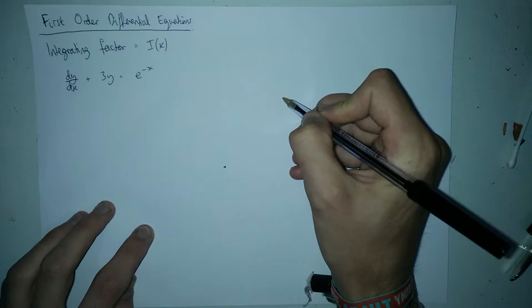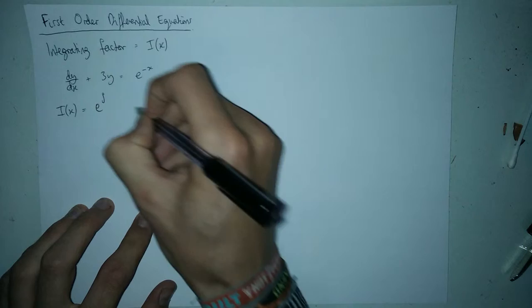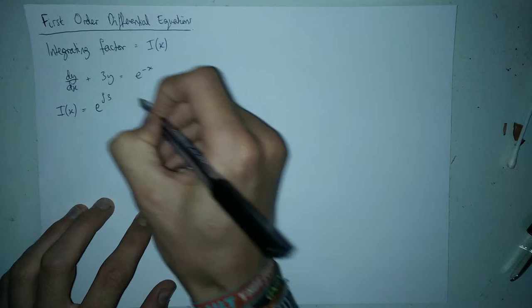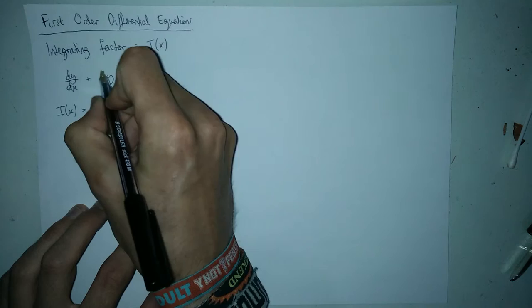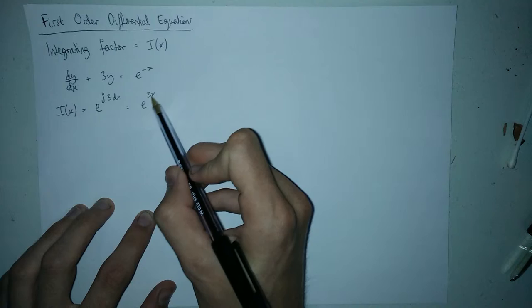I(x) is always equal to e raised to the integral of whatever function is in front of the y. In this case it's plus three, so we put the plus three in there. We integrate that three — the integral of three is three x — and the e just stays there, so this gives us e to the three x as the integrating factor for this particular first order differential equation.